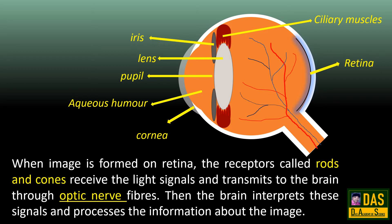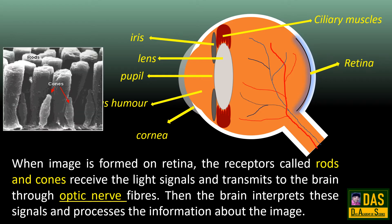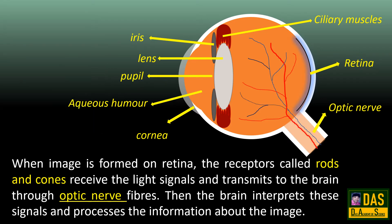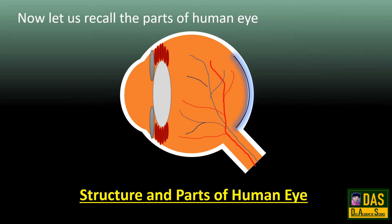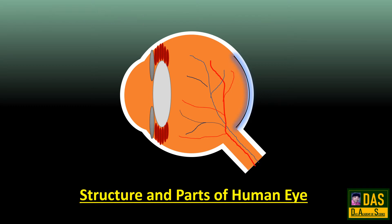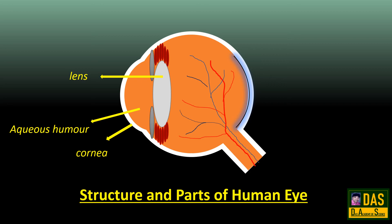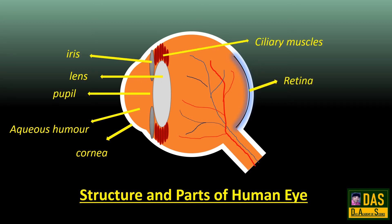The light that enters through the pupil forms an image on the retina, which covers the rear part of the eyeball. The receptors called rods and cones receive the light signals and transmit them to the brain through optic nerve fibers. The brain then interprets these signals and processes the information about the image. The parts of the human eye are: cornea, aqueous humor, lens, iris, pupil, retina, ciliary muscles, and optic nerve.